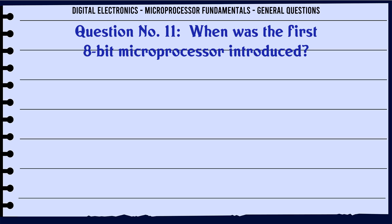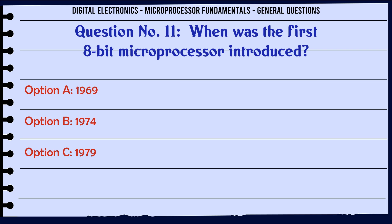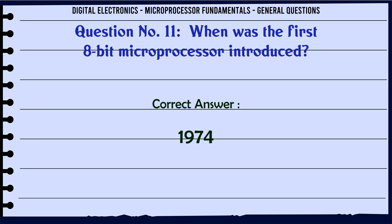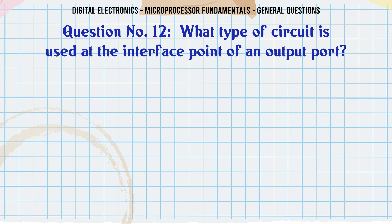When was the first 8-bit microprocessor introduced? A. 1969, B. 1974, C. 1979, D. 1985. The correct answer is 1974.